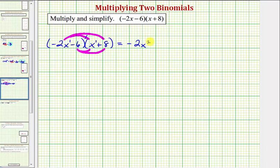And then we have negative two x times positive eight, that would be negative 16 x. So instead of writing plus negative 16 x, let's just write minus 16 x. So we found the first two products, and now we distribute the negative six.